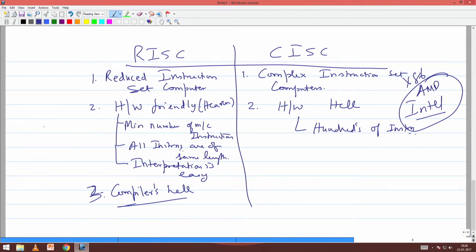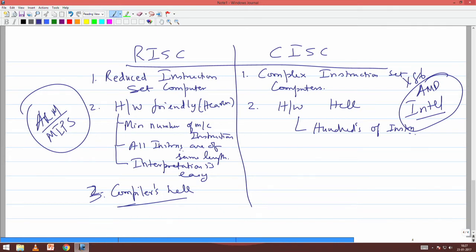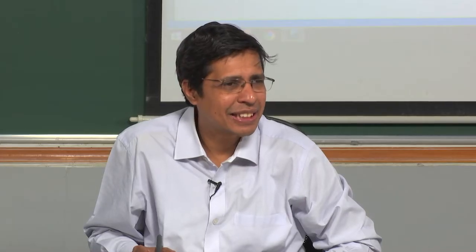CISC will have hundreds of instructions. The Intel manual is around 500 pages — just the instruction set alone is 570 or 580 pages — which basically describes all these instructions. And instructions will not be of same length — they are variable length.